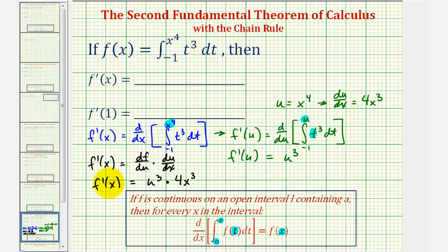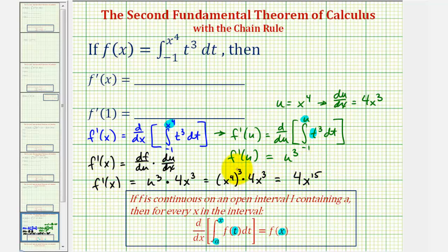But of course we want f prime of x in terms of x, so now we'll substitute x to the fourth for u. So we'd have x to the fourth raised to the third times four x to the third. This would be x to the twelfth times four x to the third, which would be four x to the fifteenth, which is f prime of x, which we were looking for. So this is four x to the fifteenth power.